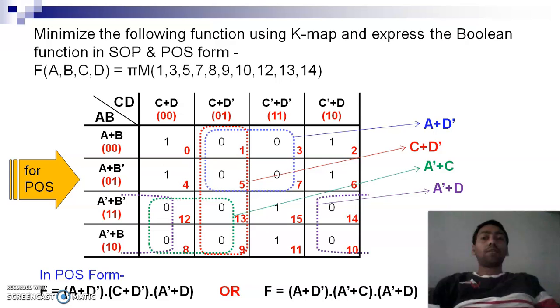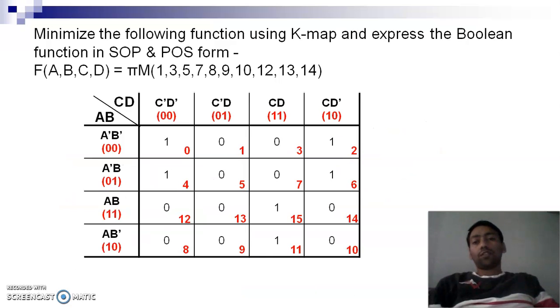For SOP expression, if you remember the last example, whenever we have to find SOP expression, what we do is we do grouping of the number of ones. So if we have to find SOP expression for the given K-map, the number of zeros or ones will be as it is. Where max terms are given, we put zeros. For SOP we can either use max terms or take the reverse and use min terms where we put ones.